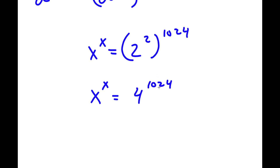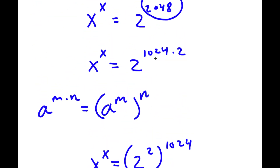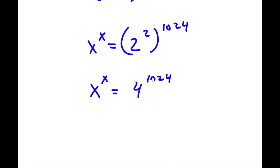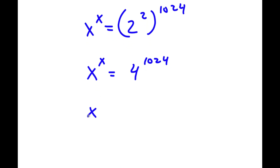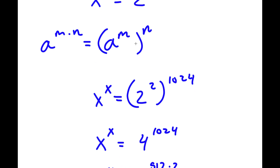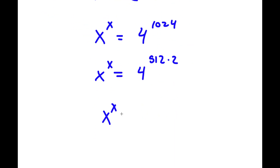Now 1024 — remember how I rewrote 2048 as 1024 times 2 — now I'm going to rewrite 1024 as 512 times 2. So now I have 4 to the power of 512 times 2. And I'm going to do the same thing: if I have something in the form a to the power of m times n, that's equal to a to the power of m to the power of n. So this is equal to 4 to the power of 2 to the power of 512.